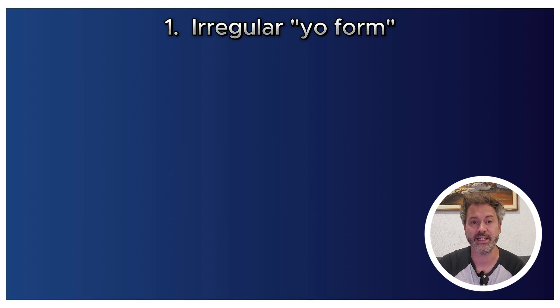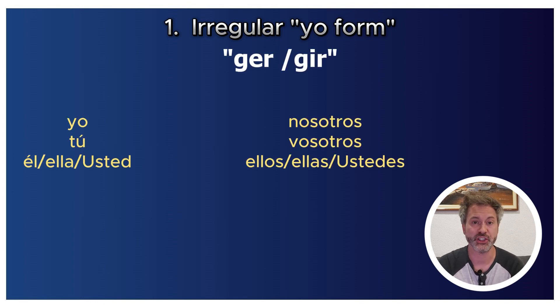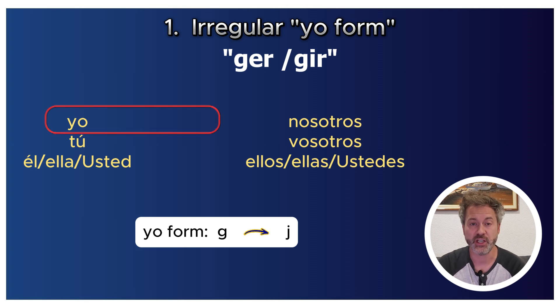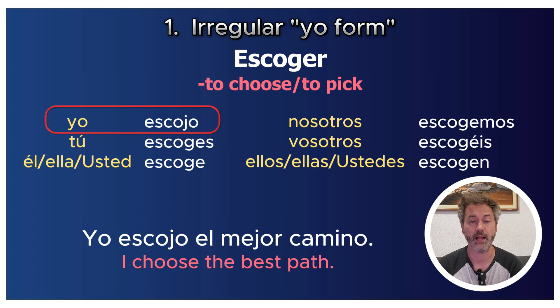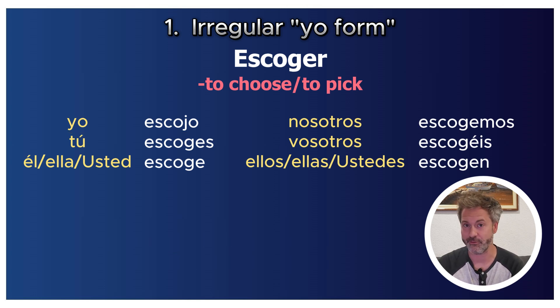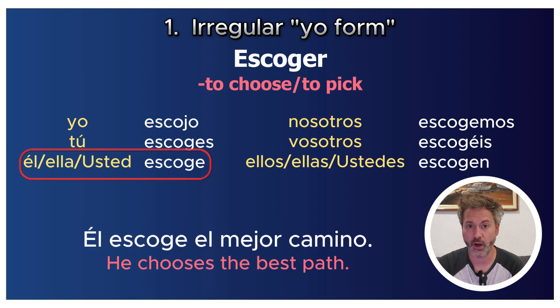There are a variety of reasons why these endings need to change — sometimes to preserve pronunciation, other times for orthographic reasons. We just have to learn the patterns. For verbs ending in -ger or -gir, the G changes to J in the yo form. For example, escoger becomes 'yo escojo' — 'Yo escojo el mejor camino' (I choose the best path) — but is regular in every other form: 'Él escoge el mejor camino.'